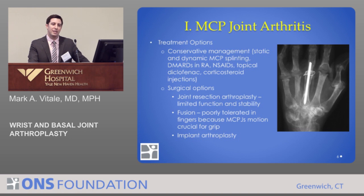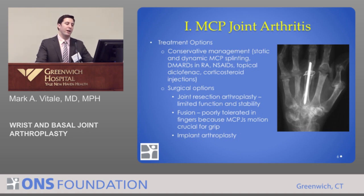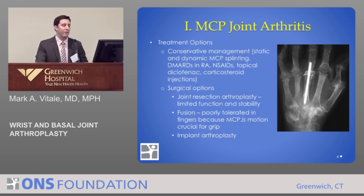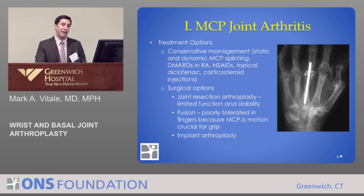What are treatment options for MCP joint arthritis? We have our usual armamentarium of conservative measures, including splinting, injections, and anti-inflammatory medications. Topical anti-inflammatories can be quite helpful here. DMARDs in the rheumatoid population have really dramatically reduced the incidence of disease.